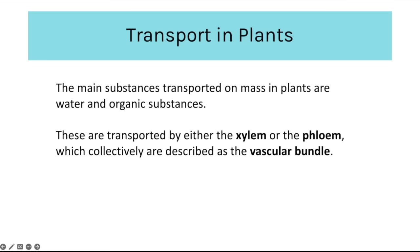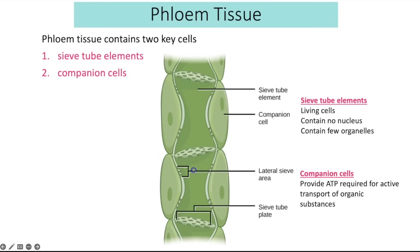Transport in plants: the main substances transported en masse in plants are water and organic substances — products of photosynthesis containing carbon. These are transported by either the xylem or the phloem, which together form the vascular bundle. The phloem tissue is made up of sieve tube elements and companion cells. Sieve tube elements are living cells with no nucleus, very few organelles, and perforated end walls to assist in mass transport of fluids. They are dependent on companion cells to provide the ATP required for active transport of organic substances into the sieve tube element.